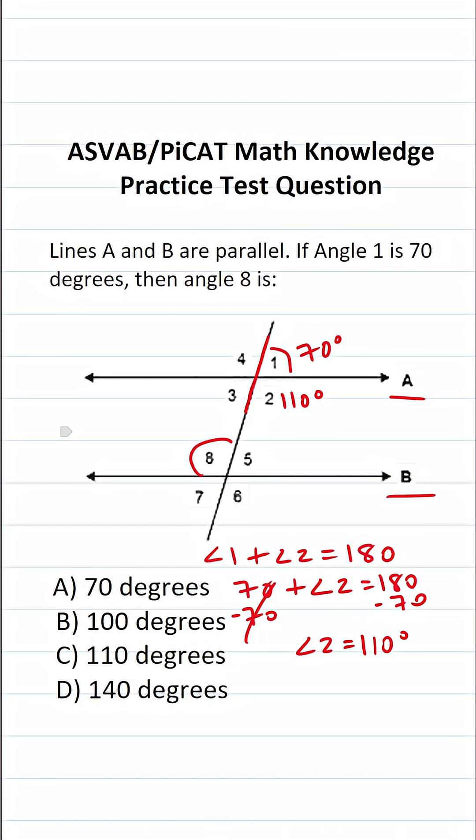Angle 2 and angle 8 are alternate interior angles. Alternate interior angles are congruent, meaning they're equal. So if angle 2 is 110 degrees, then its alternate interior angle, angle 8, is also 110 degrees.